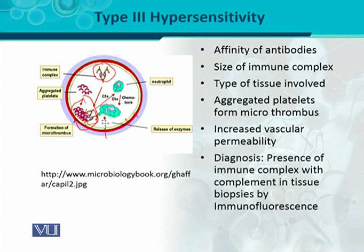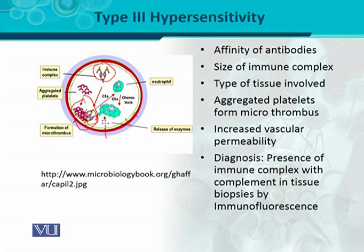For diagnosis of type 3 hypersensitivity, it is important to detect the presence of immune complexes. If tissue-specific, a biopsy of the tissue is taken and immune complexes are detected using a technique called immunofluorescence. In this technique, a section of the tissue is prepared, antibodies tagged with a fluorescent dye are applied, and if fluorescence is observed under a fluorescence microscope, it confirms that the tissue is damaged and immune complexes along with complement proteins are deposited there. This is a very important diagnostic technique for type 3 hypersensitivity reactions, which are critical due to immune complex deposition on various tissues and cells of the body.